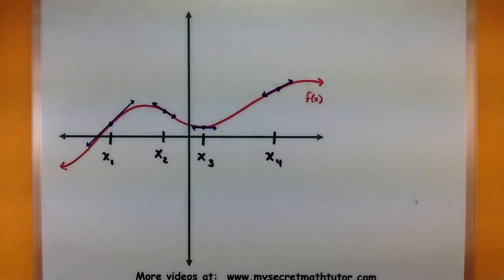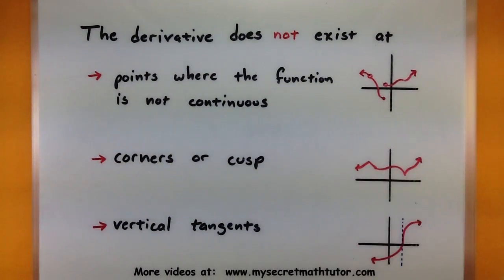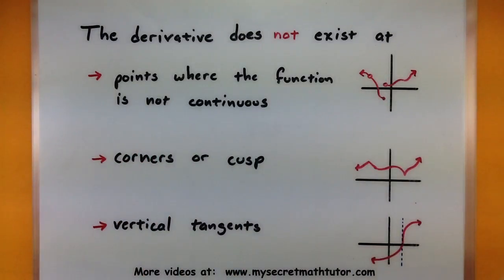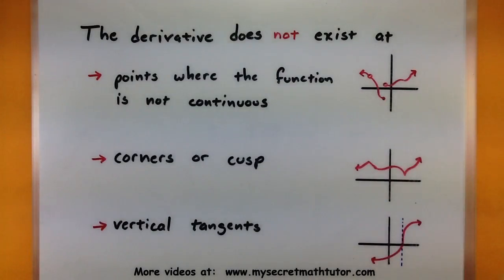But unfortunately, there are a few spots where the derivative does not exist. Let's briefly look at some places where you're not going to get a derivative. Since we're interested about specific points on the function and what's happening there, you can't have a derivative where the function is simply not there or where it's not continuous. So imagine your holes or your breaks or your gaps. If you have anything like that in your function, you can't build a tangent line there. So derivative doesn't exist.